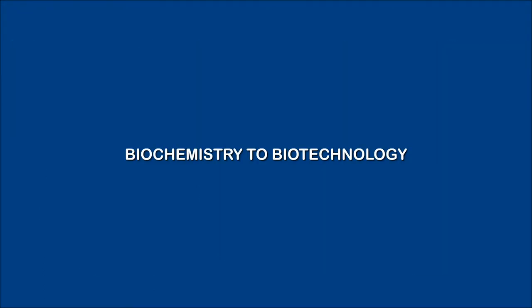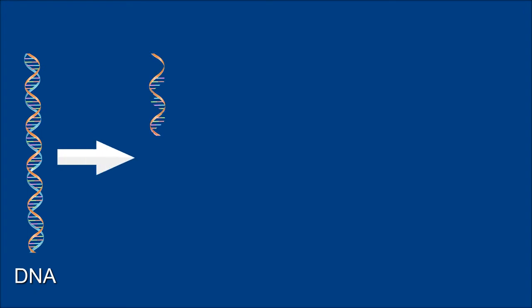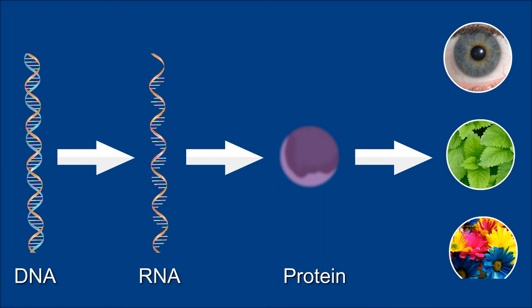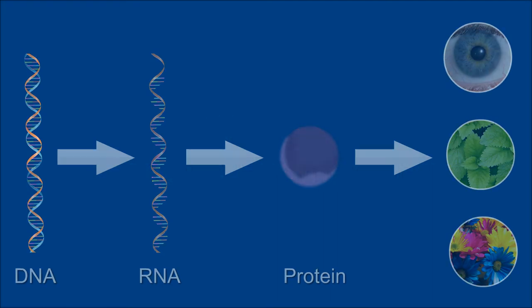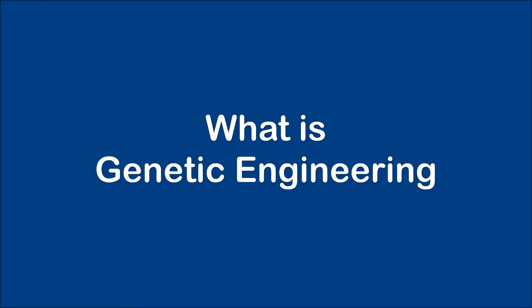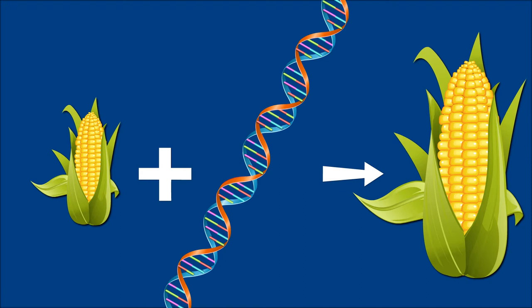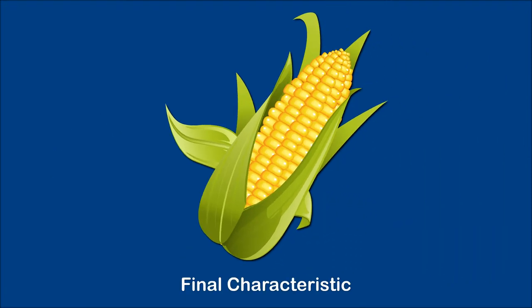Biochemistry to biotechnology. We have seen that in any living DNA, a chemical is the instruction manual which determines the different traits and characteristics of the living organism. Now, genetic engineering, a biotechnological process, can be used to manipulate this DNA code and hence change the final characteristic.